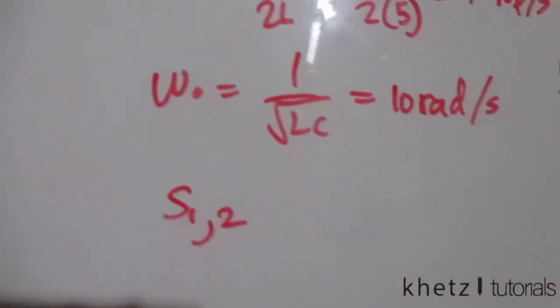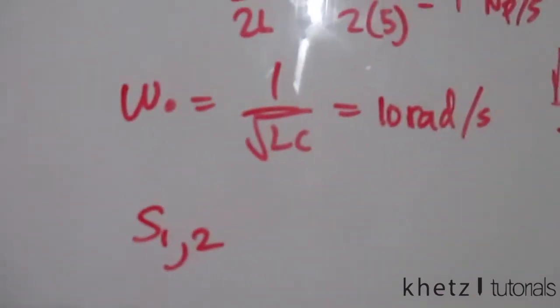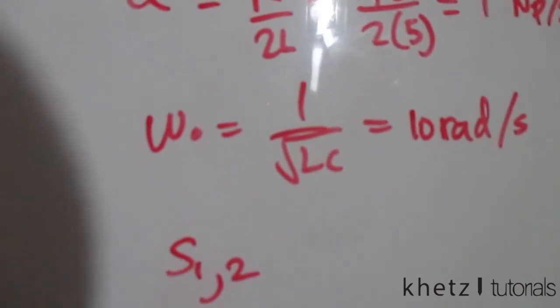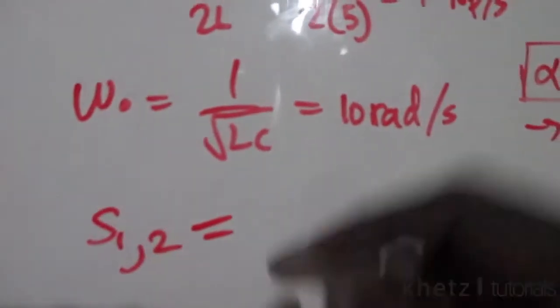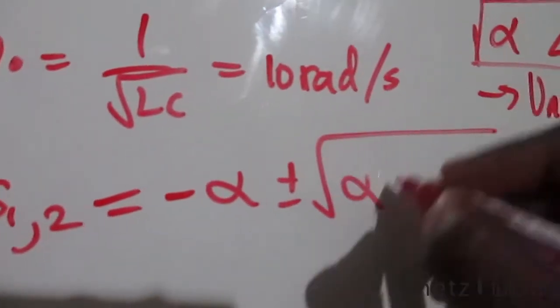With your calculator in complex form, you can compute the roots using the formula: negative alpha plus or minus the square root of (alpha squared minus omega_o squared).